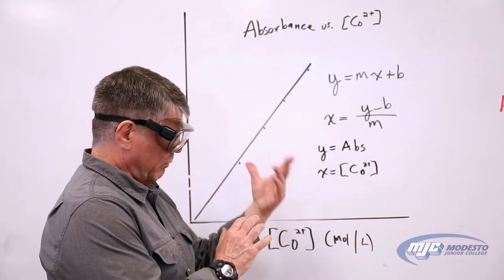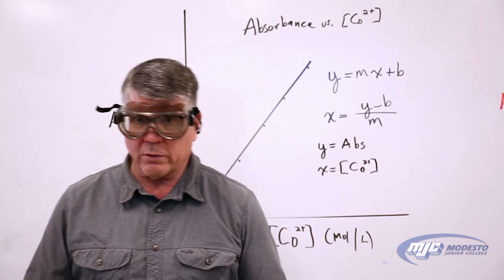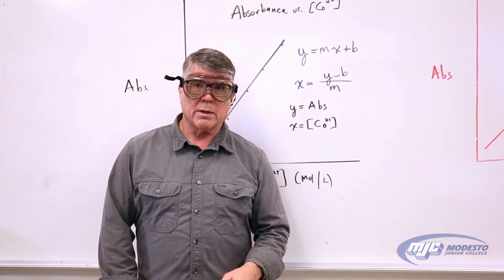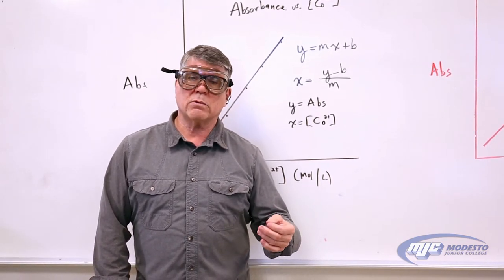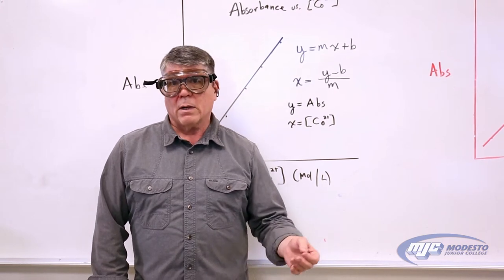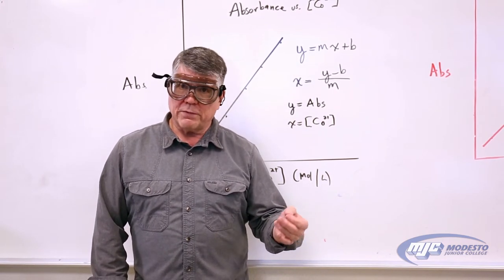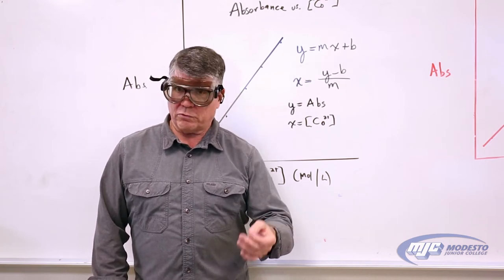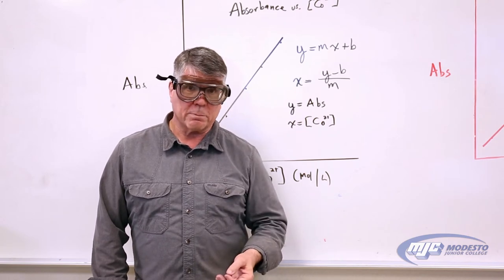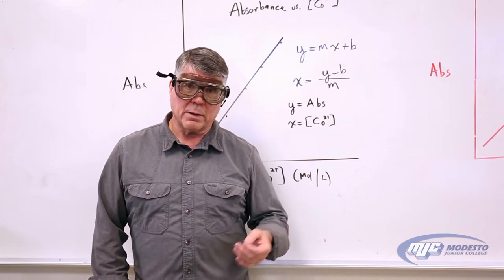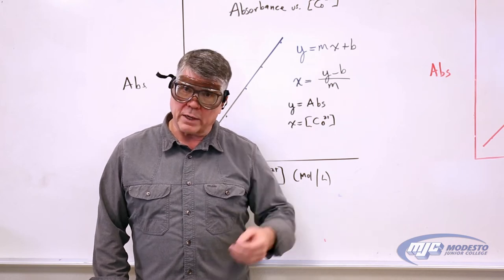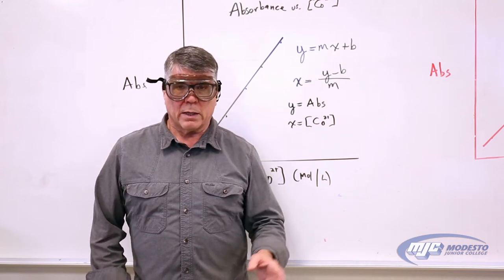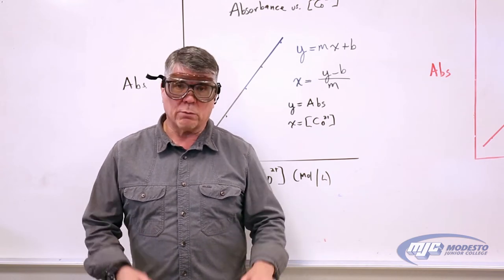To make our standard curve, we're going to need a stock solution. You should calculate ahead of time and place in your pre-lab how many grams of cobalt-2 chloride hexahydrate you'll need to make 50.00 milliliters of a roughly 0.30 molar solution. You should also calculate how much copper-2 sulfate pentahydrate you'll need to make a 0.12 molar solution, 50 milliliters of that, and you're going to weigh out roughly that amount.